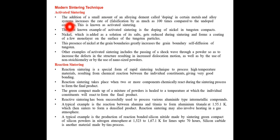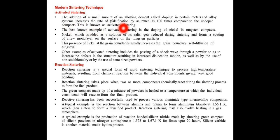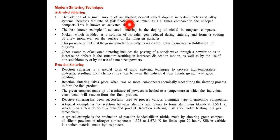Modern sintering techniques: Activated sintering. The addition of a small amount of an alloying element, called a doping agent, in certain metals and alloy systems increases the rate of densification by as much as 100 times compared to un-doped compacts. This is known as activated sintering — we add some amount of an alloying doping agent to increase the rate.